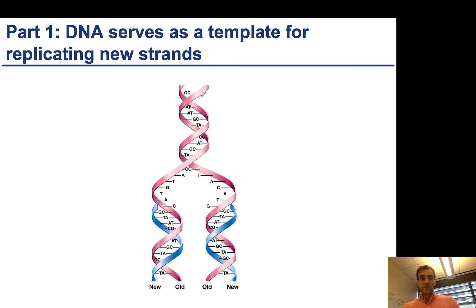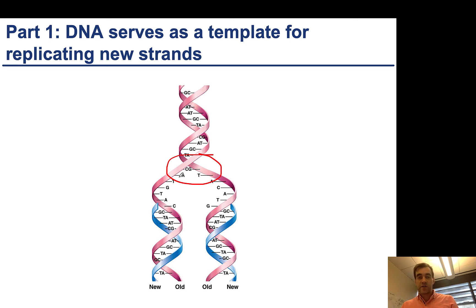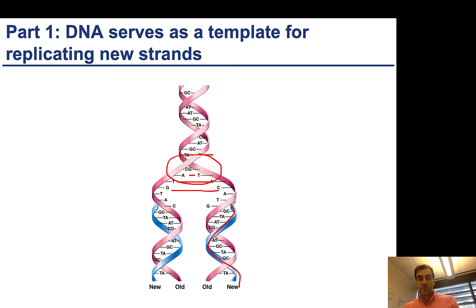DNA serves as a template for replicating new strands. Here we see a double-stranded piece of DNA that is being unwound into two single strands, and you see that the hydrogen bonds that hold the DNA strands together are breaking apart. So this A and T, this T and A, normally would have hydrogen bonds, but we've managed to separate those two strands. Here we can see the generation of new strands coming in, and these are complementary to the old strands. So we have a C that binds to the G, T, A, etc.